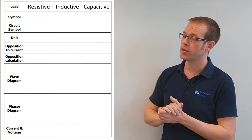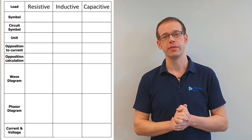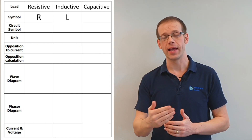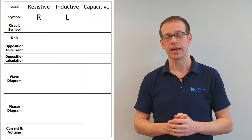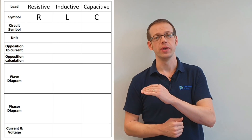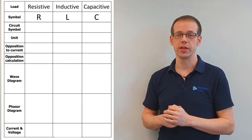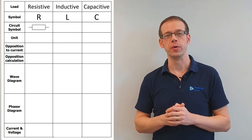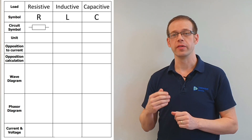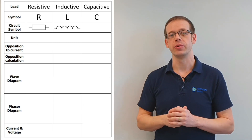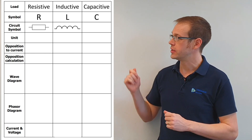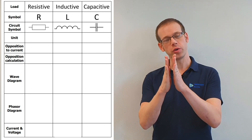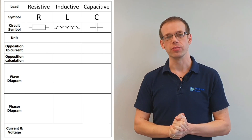The next line shows the symbols we use to represent those three different types of load. For resistive loads we use R, for inductive loads a capital L, and for capacitive loads a capital C. We also have the circuit symbols: the generally accepted symbol for a resistor, the symbol for an inductive load representing a coil, and the symbol for a capacitive load which reflects the structure of two conductive plates held close together but not touching.